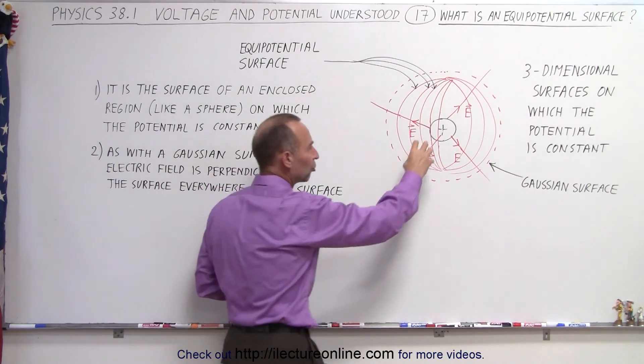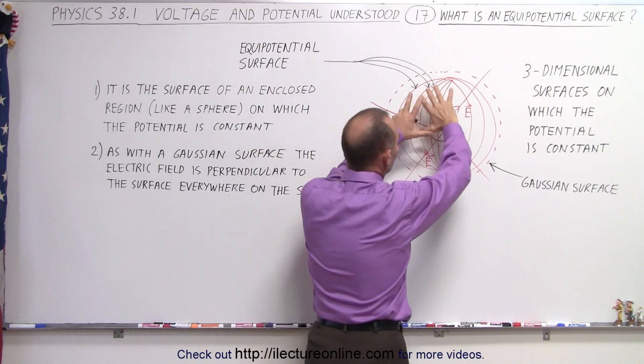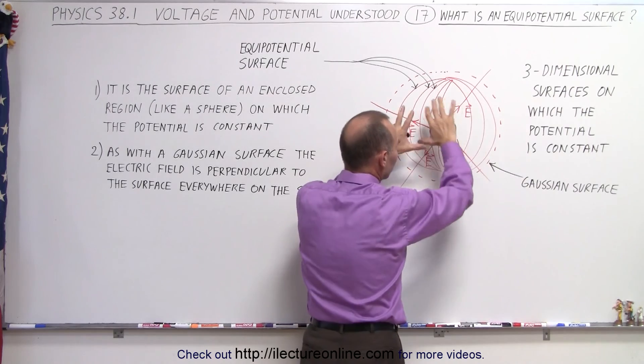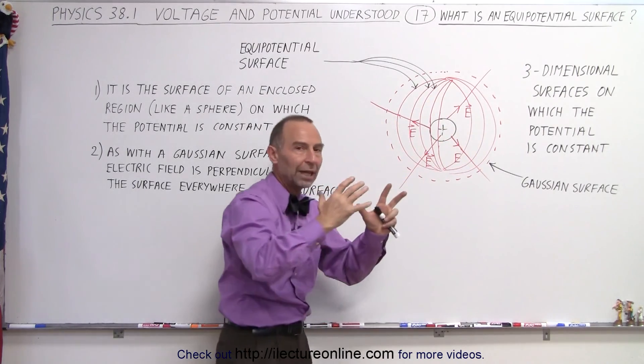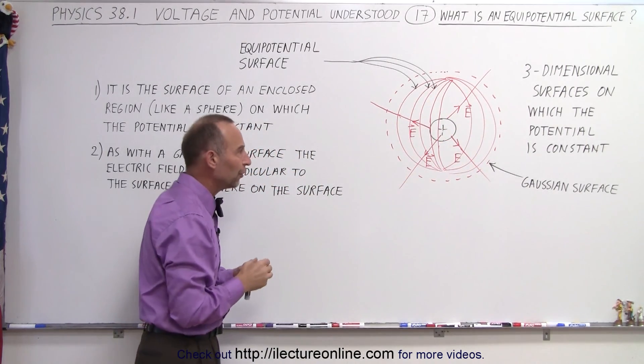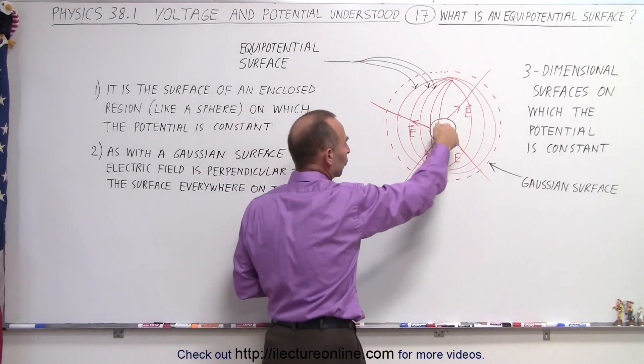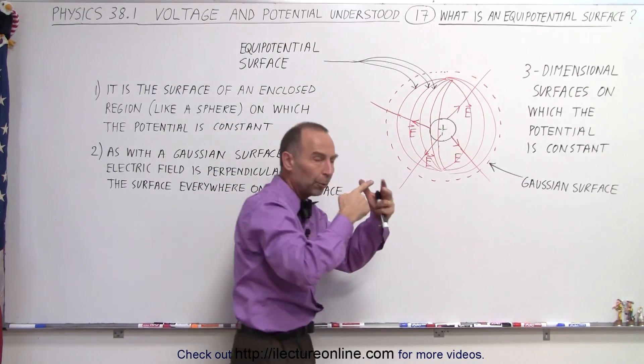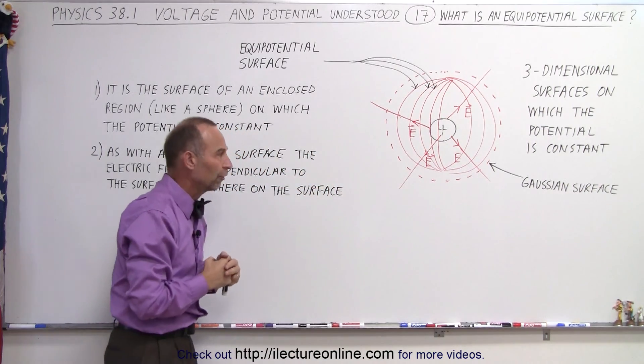So if we have a charged object and around it we draw an equipotential surface, we can then be guaranteed that everywhere along that surface in three dimensions the potential will not change, will be constant along that surface, and everywhere on the surface or through the surface the electric field lines will poke perpendicular through that surface.